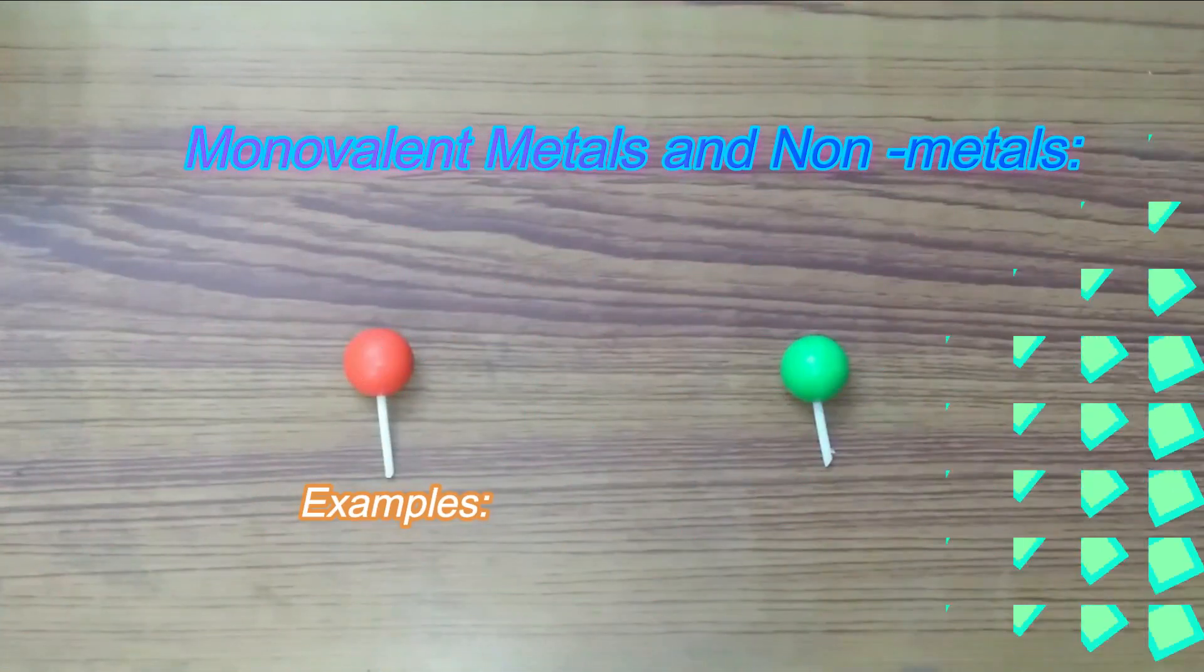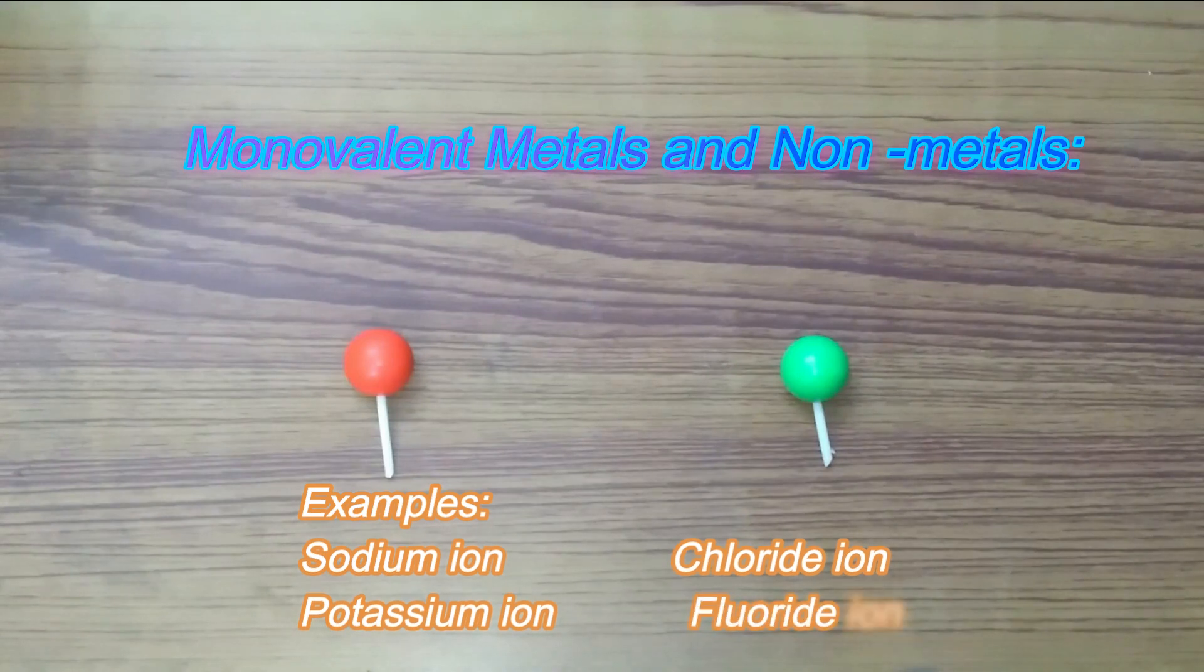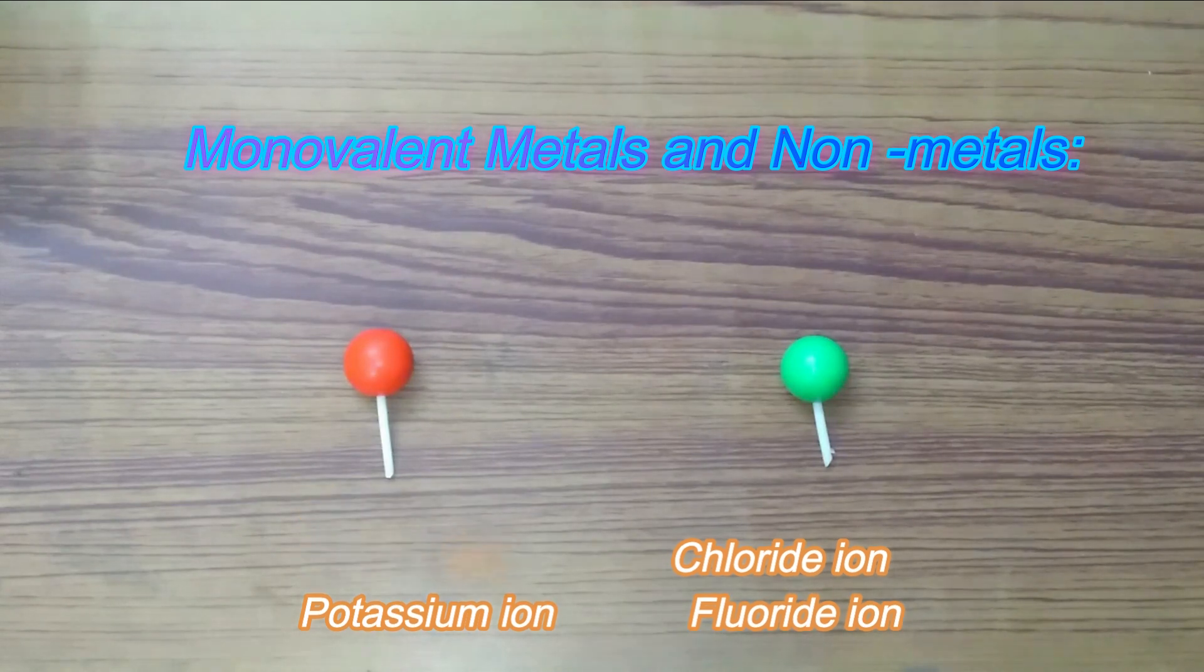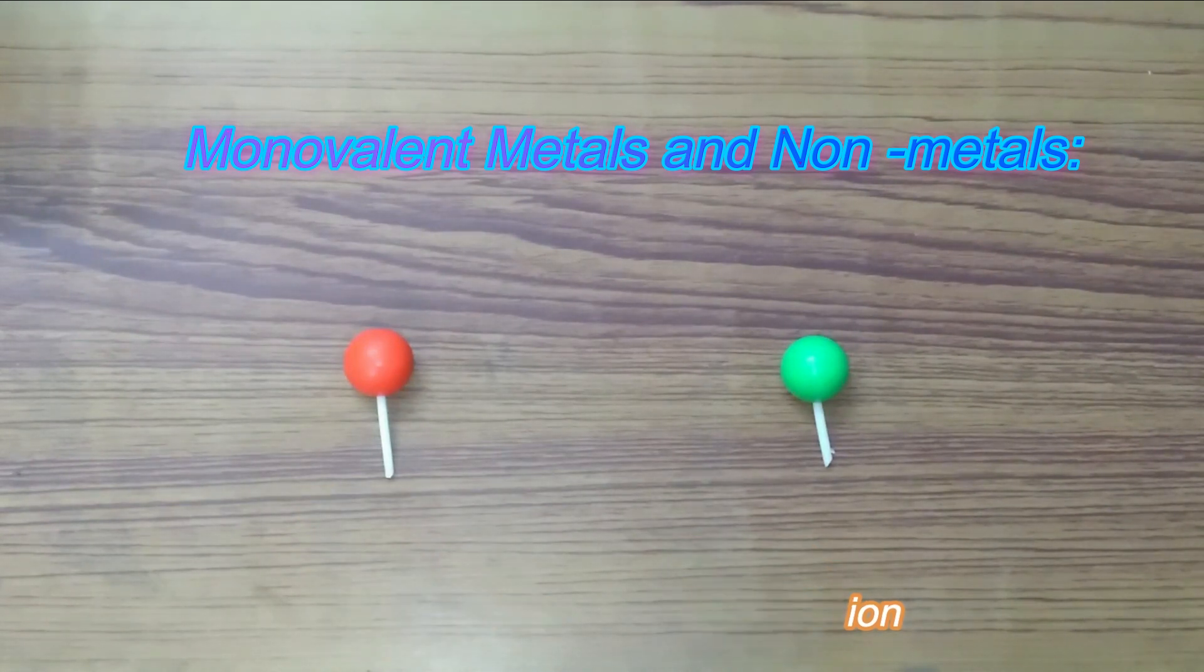The orange ball represents monovalent metals for example sodium, potassium, etc. and the green ball represents monovalent non-metals halogens like chlorine, fluorine, etc.